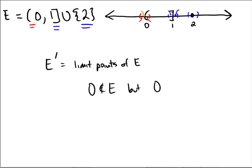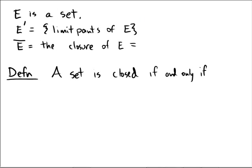but 0 is in the set of limit points of E. Okay, how does this relate to closedness then? Well, if we consider E to be a set, and we let E prime be the set of limit points of E, then we define the closure of E to be equal to E unioned with its limit points.